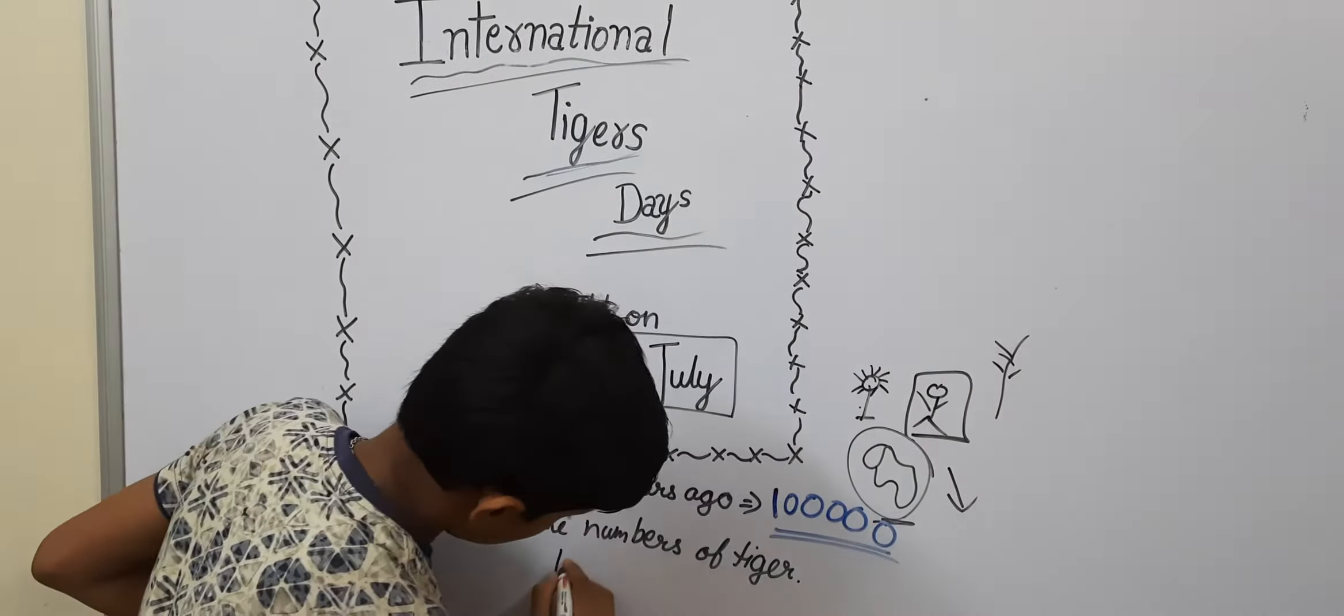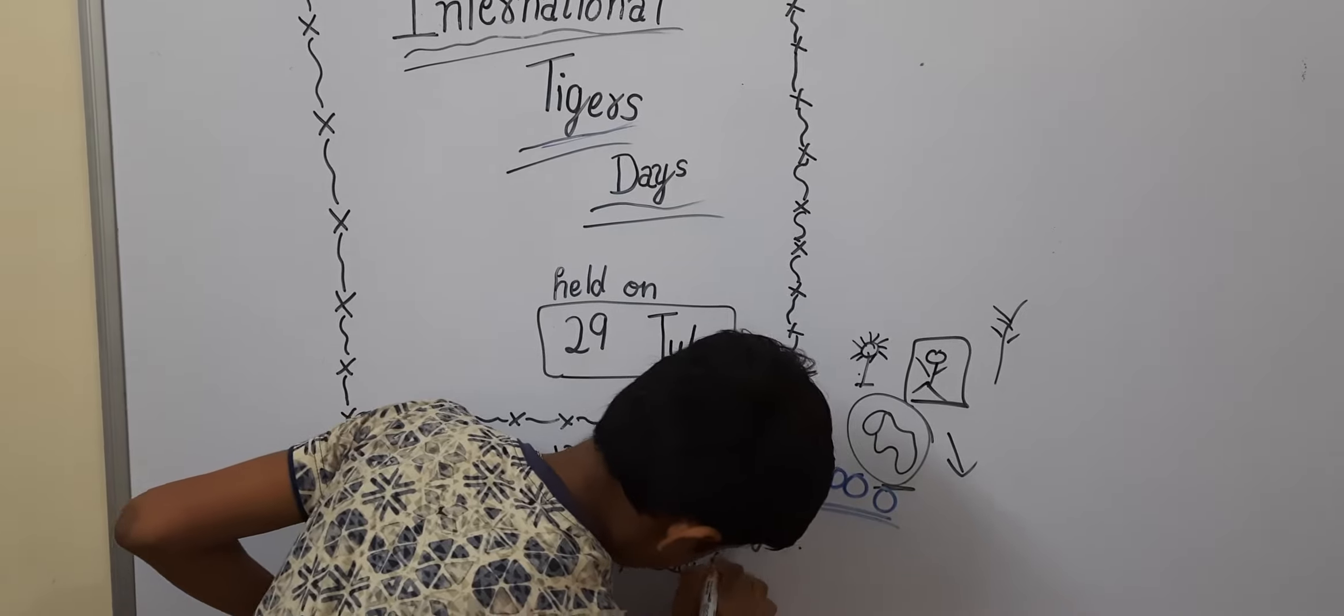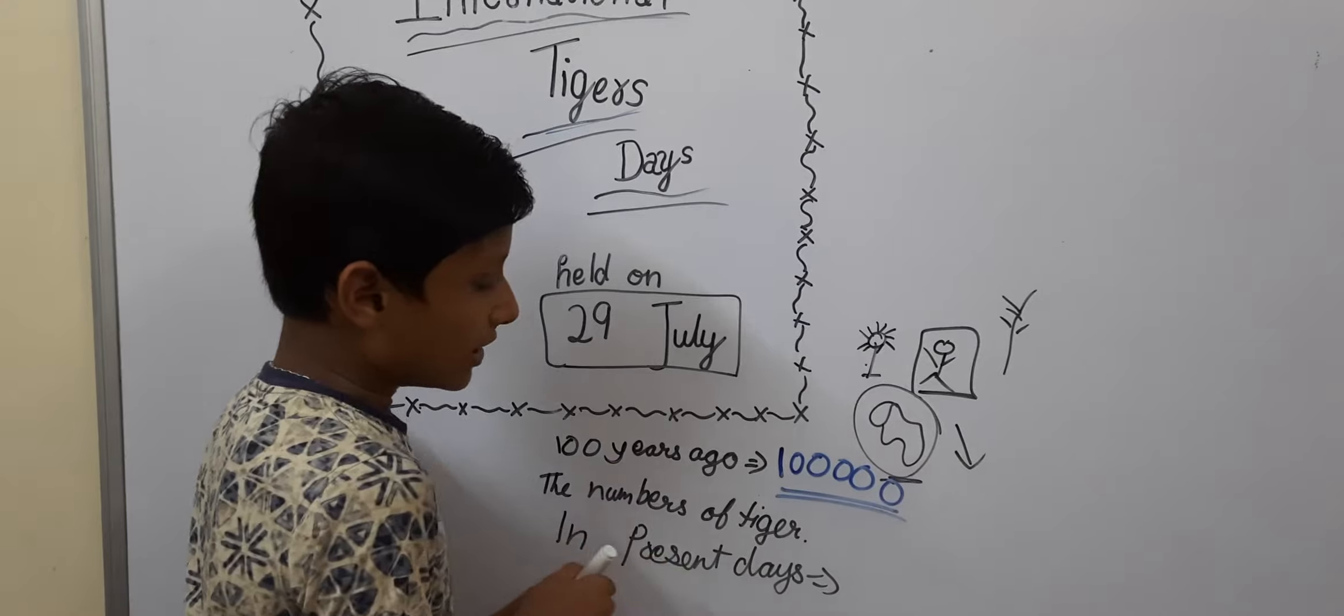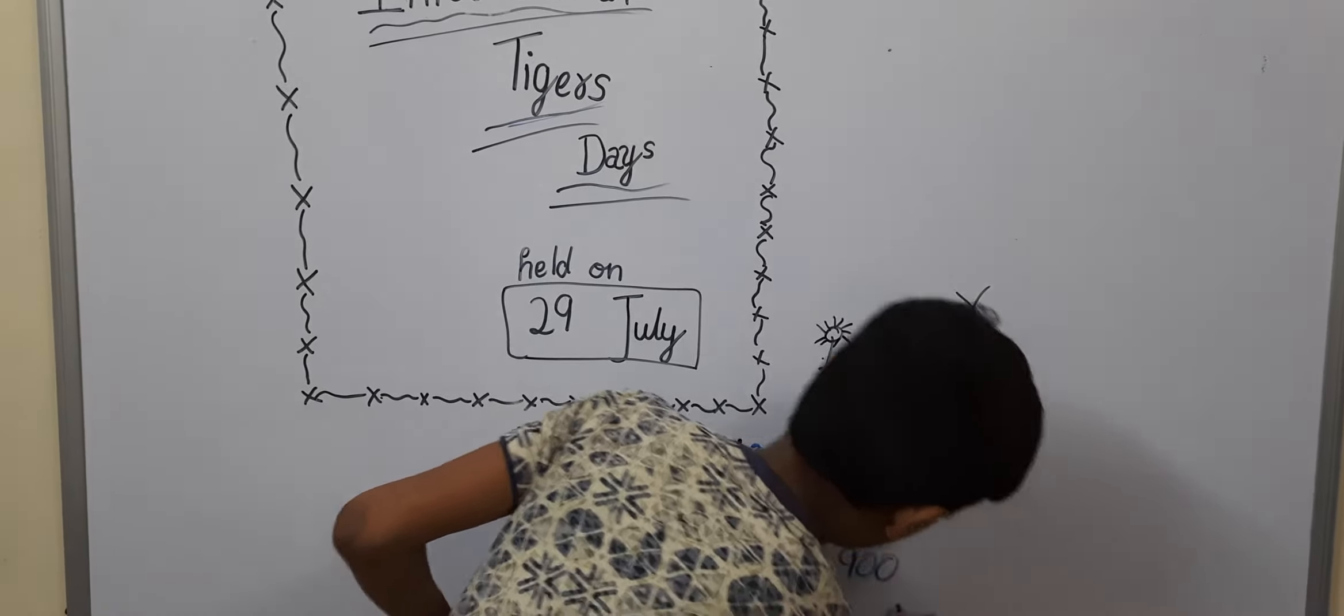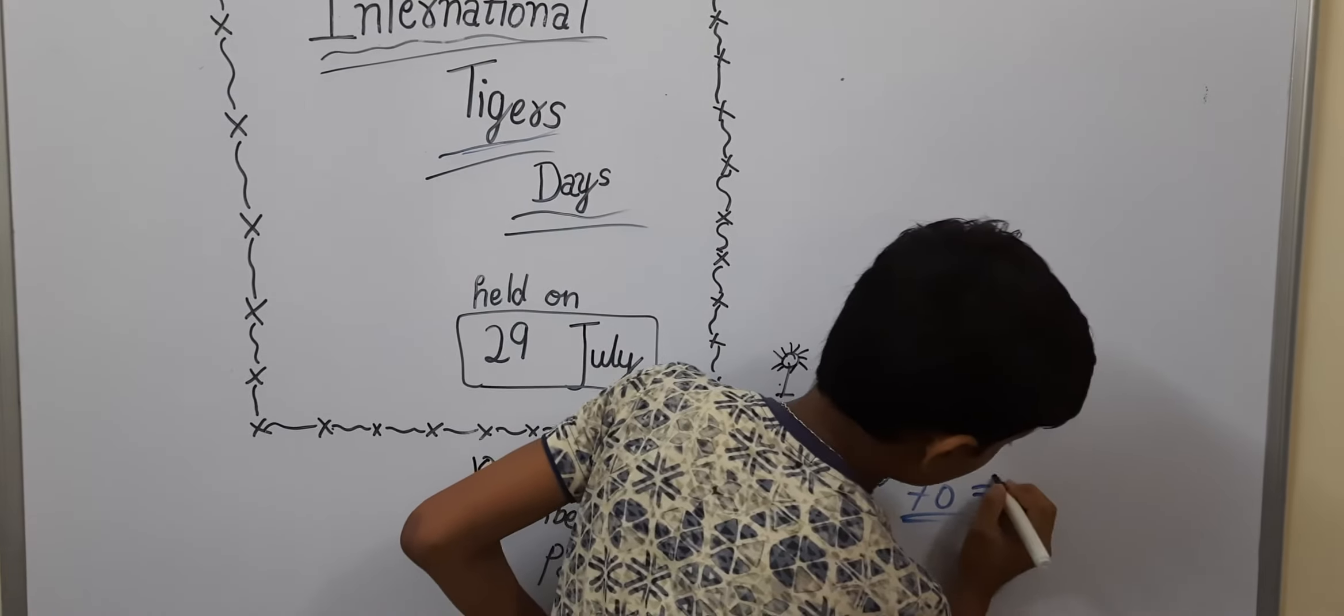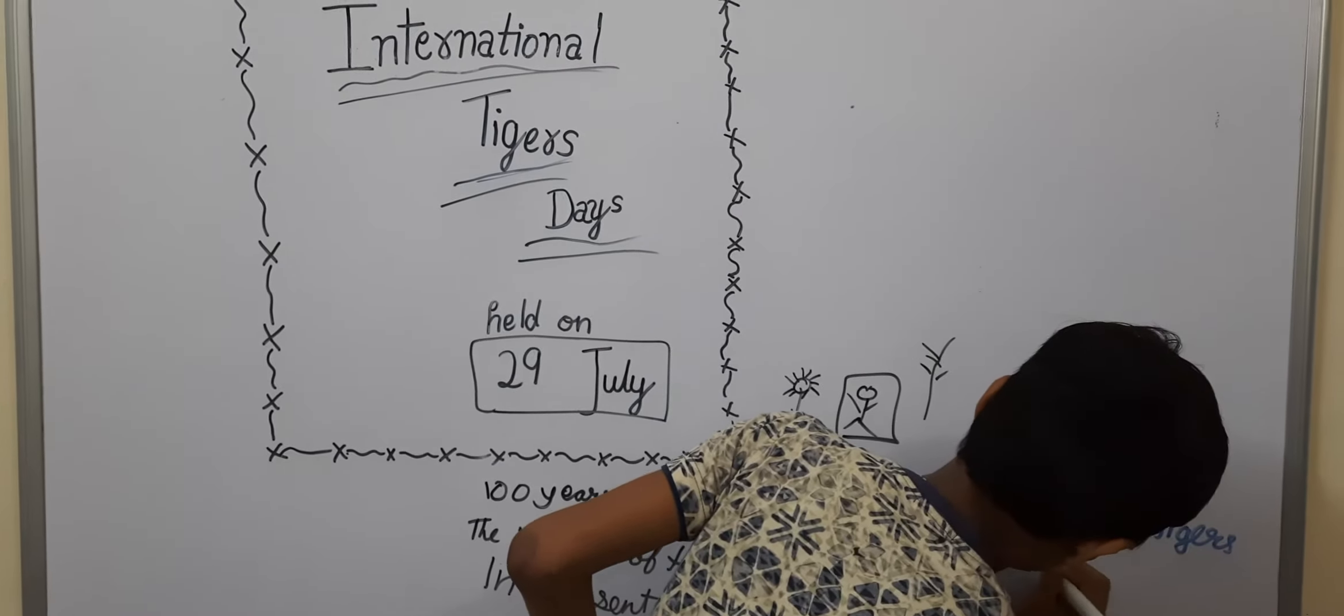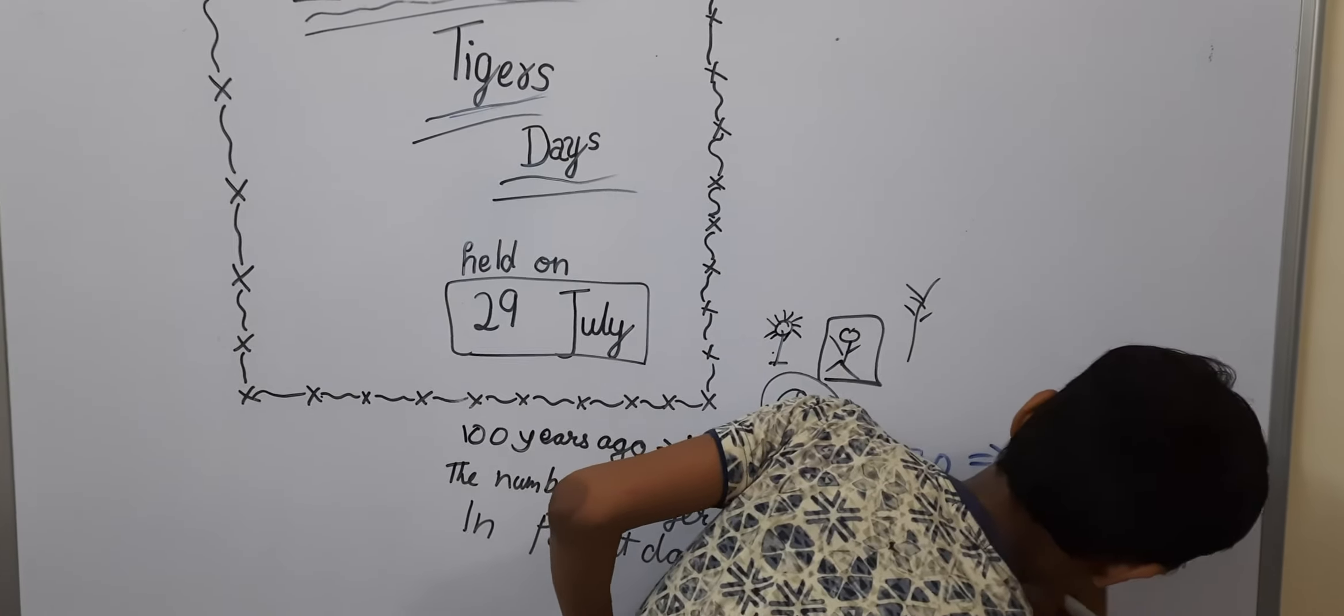And now, in these days, in present days, 1 lakh decreased to 3,900. Means in the whole world, only there are 700 tigers are left in the whole world. And 70% means 3,000. 3,000 tigers are found in India.